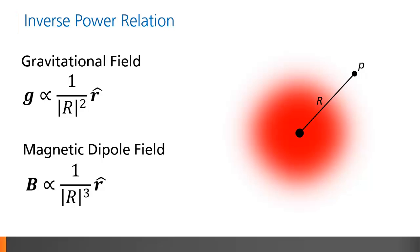You'll recall that the gravitational field observed at some point P, due to some source at a distance r, scales as the inverse square of the distance. The magnetic field, observed due to some dipole source, scales as the inverse cube of the distance.